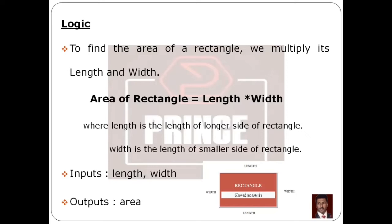To find the area of a rectangle, we multiply its length and width. The formula is: area = length multiplied by width, where length is the length of the longer side of the rectangle and width is the shorter side. The output variable is the area.